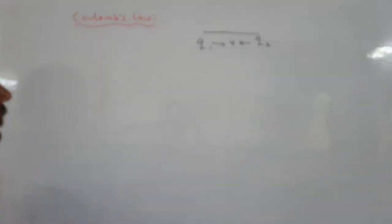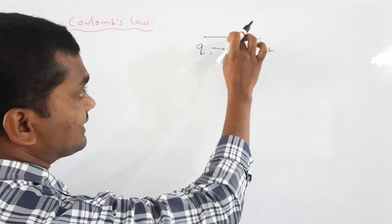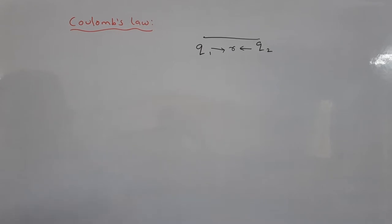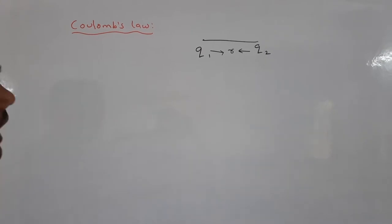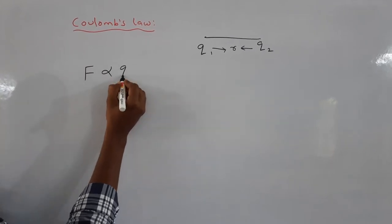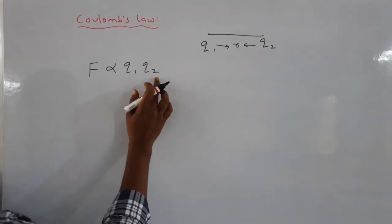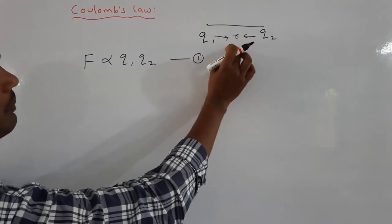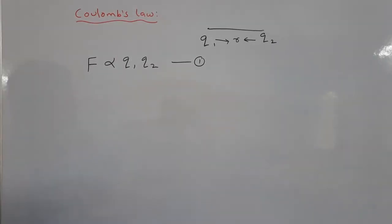Let us take two different charges q1 and q2, separated by a distance r. Now we can write the Coulomb's law equation. The electrostatic force is represented by capital F. According to Coulomb's law, the electrostatic force F is directly proportional to the product of the two charges — F is proportional to q1 times q2. The two charges may experience either a repulsive force or an attractive force.